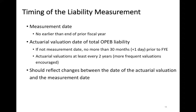The standards also require that if there are significant changes between the actuarial valuation date and the measurement date, those need to be reflected in the measurement of the liability. A government will perform what are called updating or roll-forward procedures to take those changes into account. Compared with the old standards, under which measurement could have been as much as three years prior to the fiscal year end with no updating whatsoever, this is significantly fresher information. This is a visual example: if your fiscal year end is June 30, 2018, your measurement date can be as early as June 30, 2017, which in the worst case could be based on a valuation as early as December 31, 2015, with updating procedures applied for anything significant that happened between the valuation date and the measurement date.